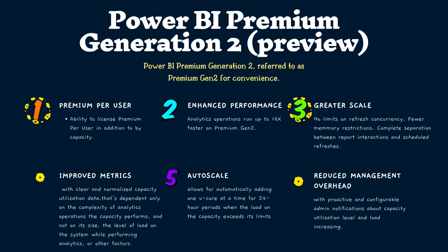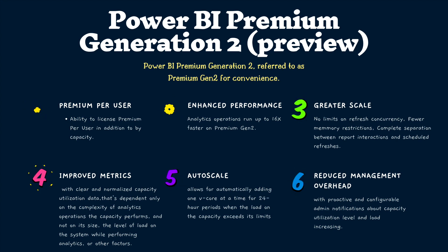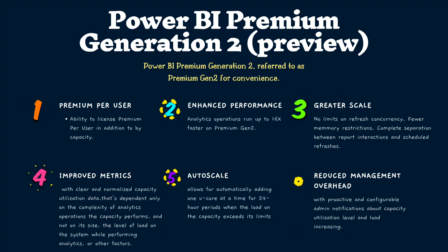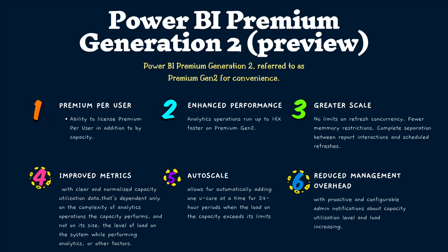Now let's see what is Power BI Premium Generation 2, which is currently in preview. Microsoft recently released Power BI Premium Generation 2, referred to as Premium Gen 2 for convenience. You can select to use the original version of Premium or switch to Premium Gen 2 — you can only use one or the other for your premium capacity. Premium Gen 2 provides many new features; the first is the ability to license premium per user in addition to by capacity. Also, analytics operations run up to 16 times faster on Power BI Premium Gen 2, and operations will always perform at top speed and won't slow down when the load approaches the capacity limit.